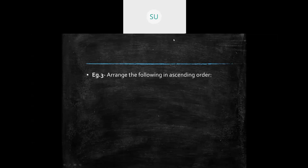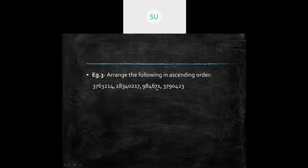Ascending order means arranging a list of numbers from the smallest to the largest — also called increasing order. For example, the smallest number in a list is the one with fewer digits: nine lakh eighty-four thousand six hundred and seventy-one. Then thirty-seven lakhs sixty-three thousand two hundred and fourteen, then thirty-seven lakhs ninety thousand four hundred and twenty-three, and finally one crore eighty-three lakhs forty thousand two hundred and seventeen.